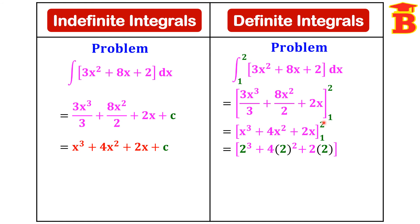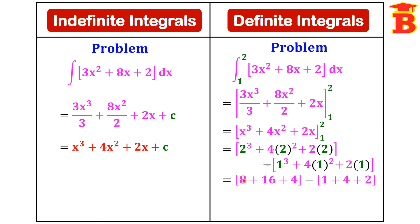Apply the upper limit by substituting x = 2: 2³ plus 4 times 2² plus 2 times 2. Minus the lower limit by substituting x = 1: 1³ plus 4 times 1² plus 2 times 1. This equals: 8 plus 16 plus 4, minus 1 plus 4 plus 2. Adding the first bracket gives 28. Adding the second bracket gives 7. So finally 28 minus 7 equals 21. That is the answer.